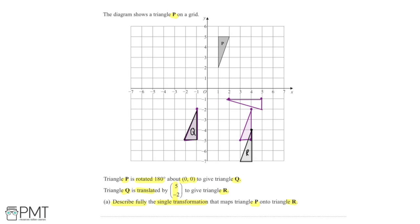To find the centre of rotation, we find the midpoint between two corresponding points on triangles P and R. This point on P corresponds to this point on R. Drawing a line between them: on the x-axis we move from 1 to 4, so the midpoint is 2.5. On the y-axis we move from positive 2 down to negative 4, and halfway between those is minus 1.